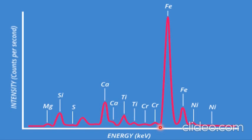Elemental composition is determined on the basis of the energy of secondary X-rays, while the chemical composition — or percentage composition of an element in a material — is determined on the basis of the intensity peak.